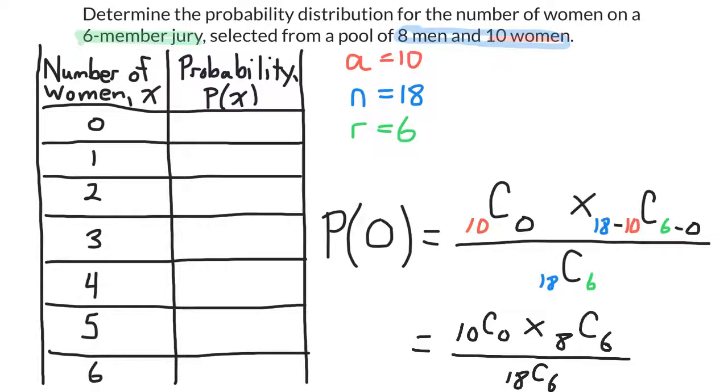And that simplifies to this. So if you plug that into your calculator, you should get 0.00151, approximately. So I'll just plug that into my probability distribution chart.